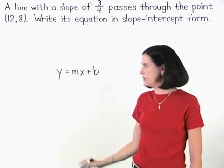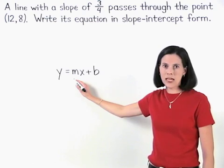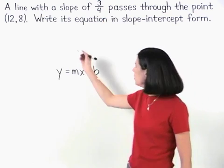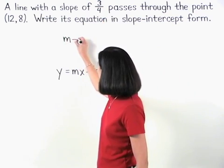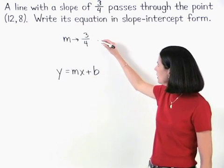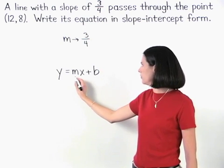To find the value of m, remember that m represents slope, and we're given that the slope of the line is 3 fourths, so we know that the value of m is 3 fourths, which means that we can substitute 3 fourths into our formula for m.